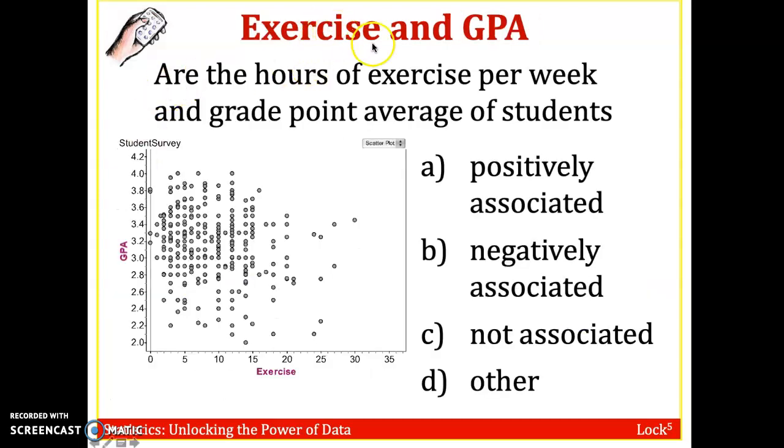All right, so let's look at exercise versus GPA. So this data came from the survey I gave in future stats classes, actually multiple stats classes a couple years ago, on the hours of exercise per week and grade point average of students. Is it positively associated, negatively associated, not associated, or some other type of association?